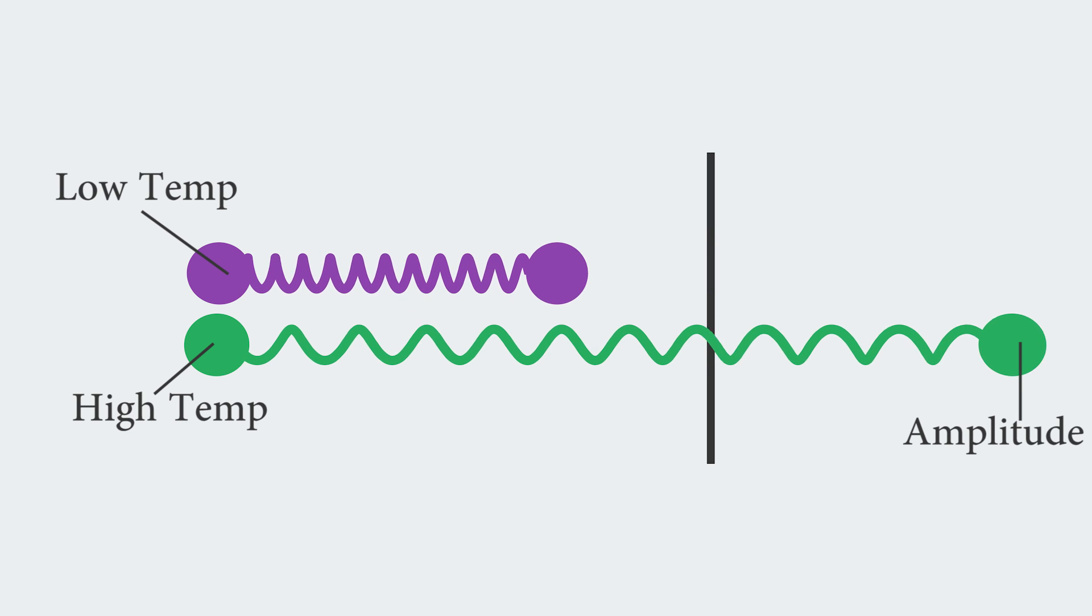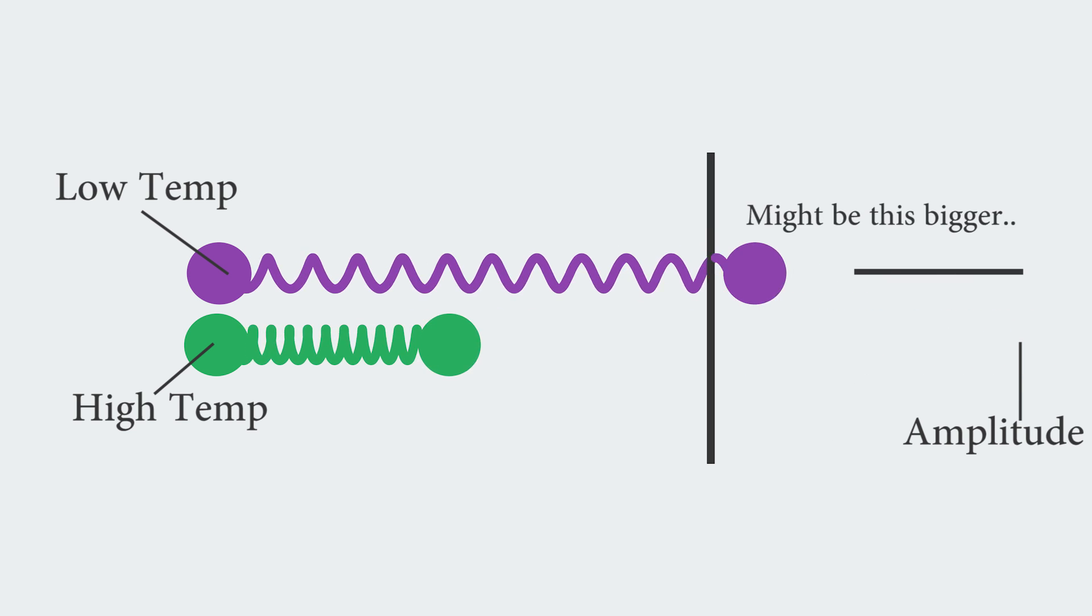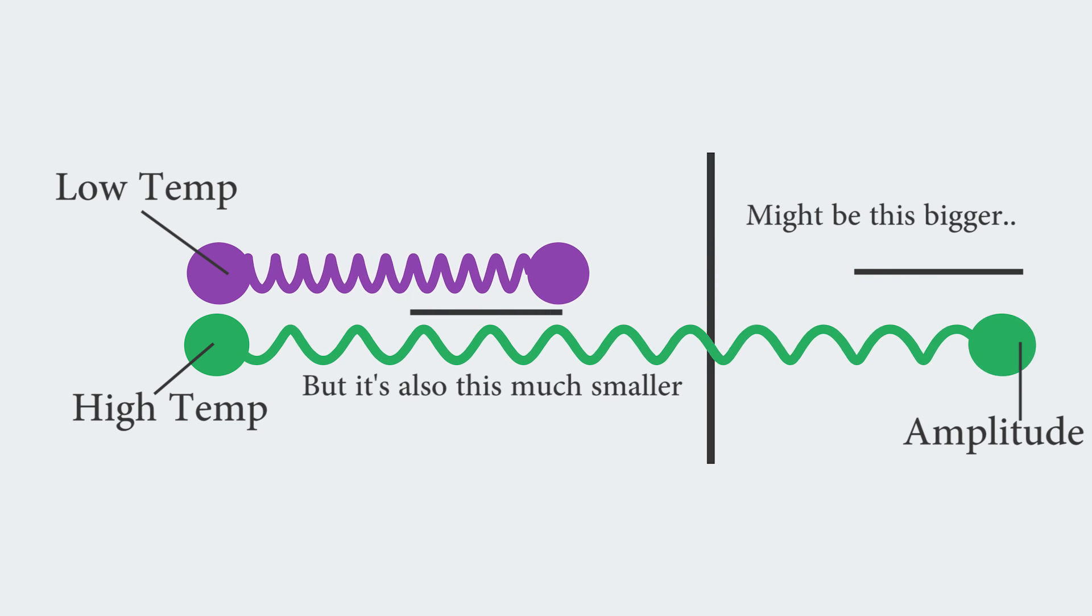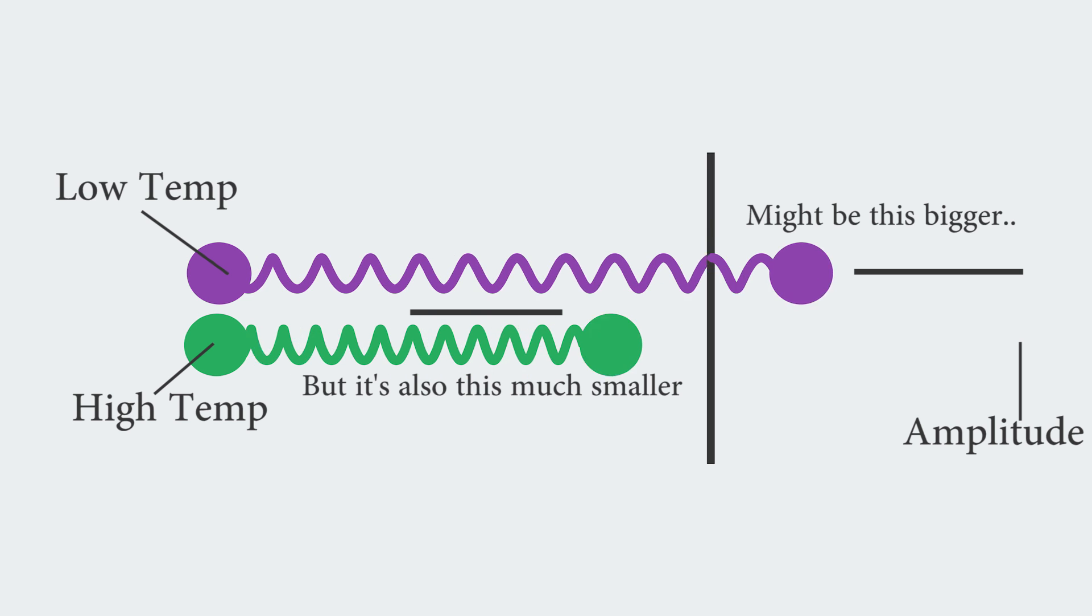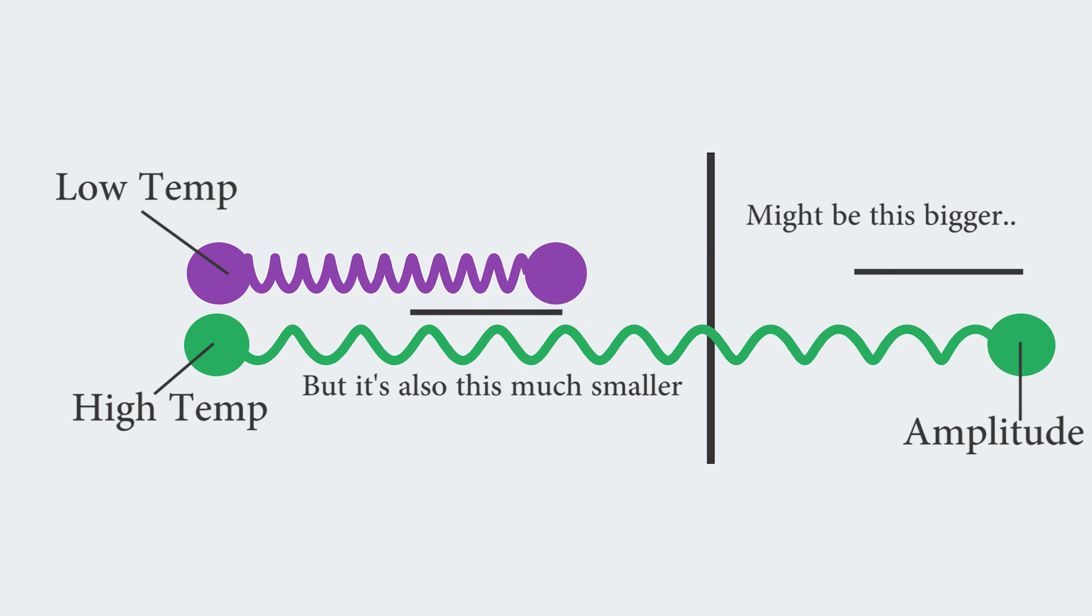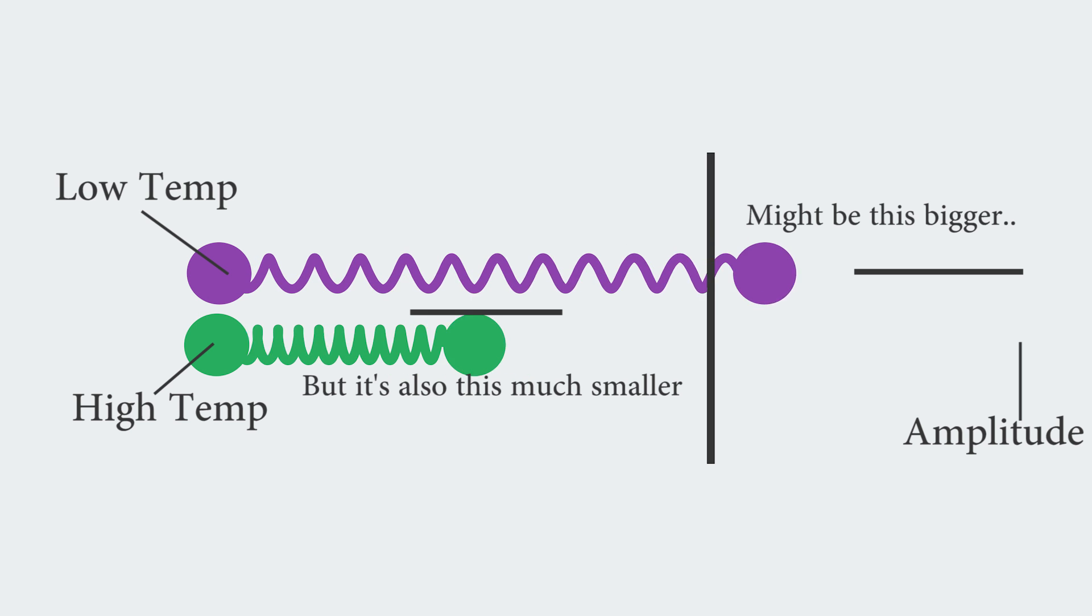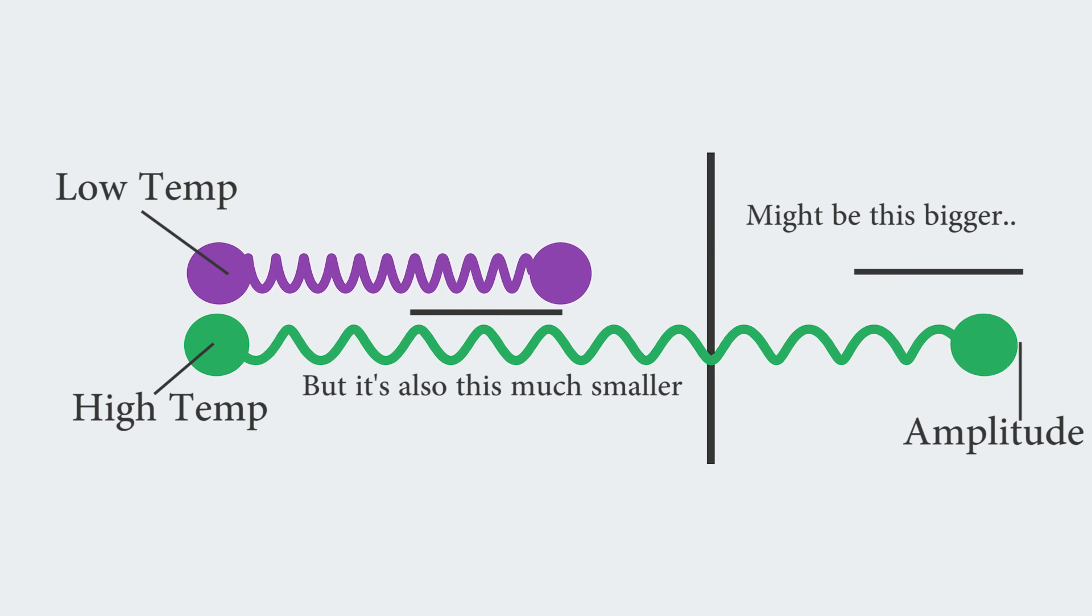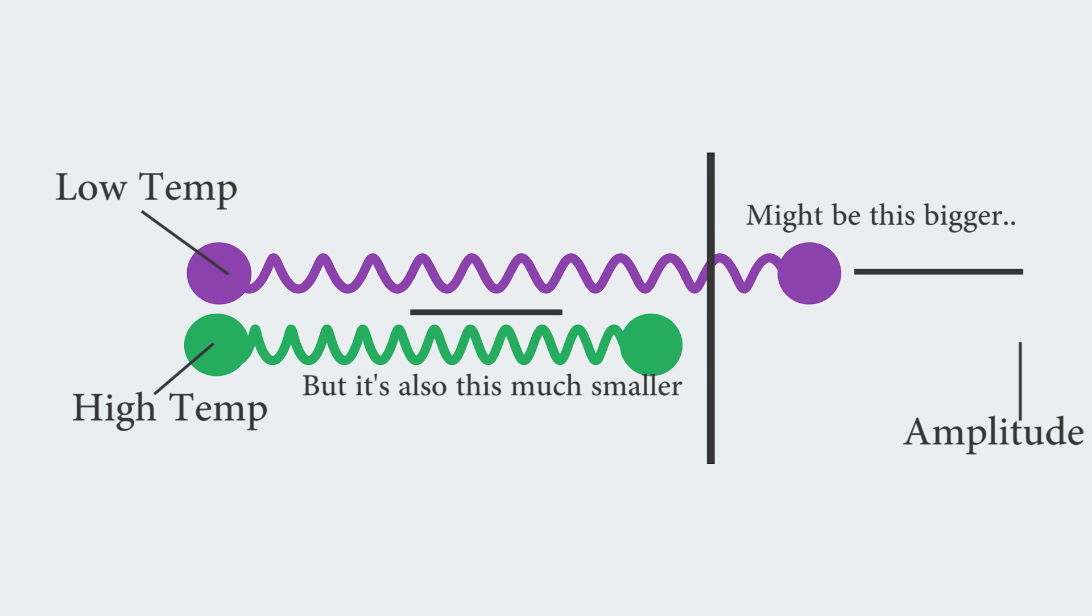But you should also see that the green uses just as much time being compressed than stretched. So the average difference in expansion in this picture would be zero. Because just as much time is being spent on being big, it is also spent on being smaller compared to the purple substance, the cold substance. Thus, the overall expansion is zero.